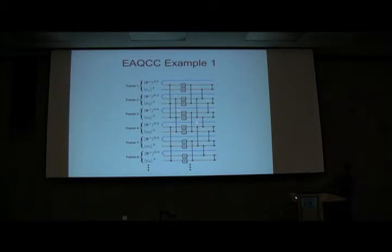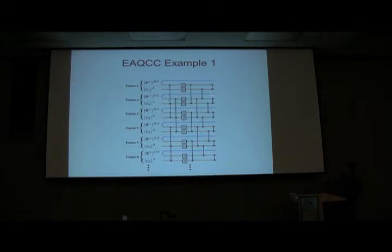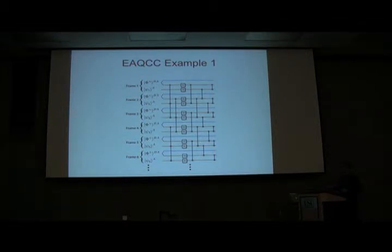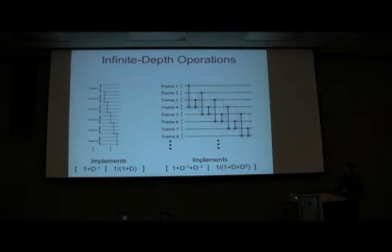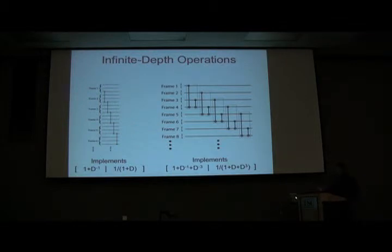This encoding circuit is finite depth, and the circuit to decode is the exact inverse — you perform these operations in reverse order. These would be useful for a fault-tolerant quantum computing application. Now, let's talk about infinite depth operations. These are operations we introduced because we wanted to import the full classical theory into quantum convolutional coding theory. These are operations you perform when encoding, since we assume noiseless encoding for some of these codes.